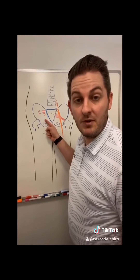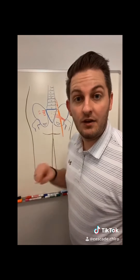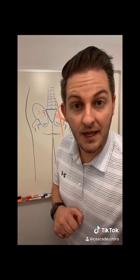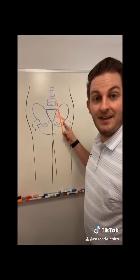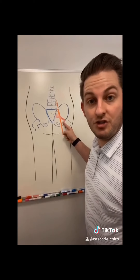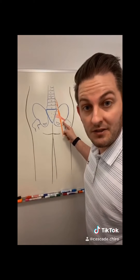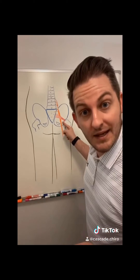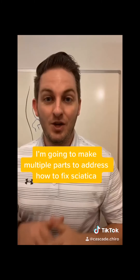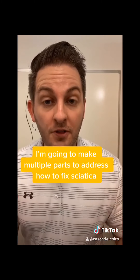Pain coming from your SI joint can also refer pain down the leg into the butt. You can also have a trigger point in your piriformis muscle that refers pain down the butt. We're going to go over all the solutions.